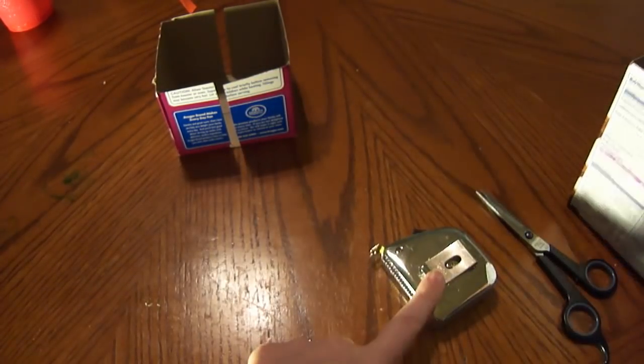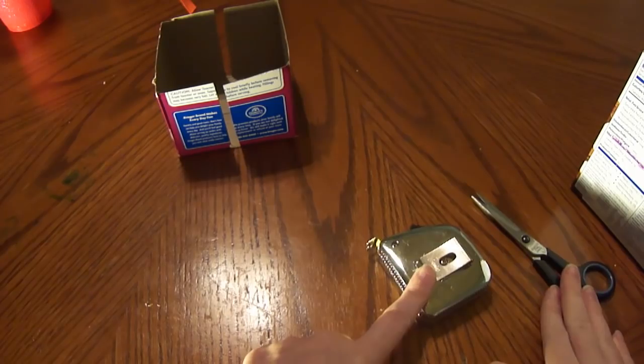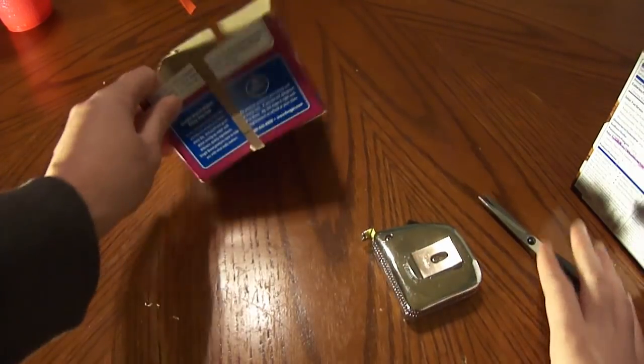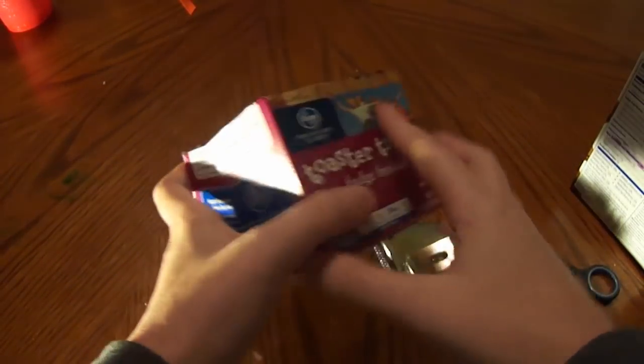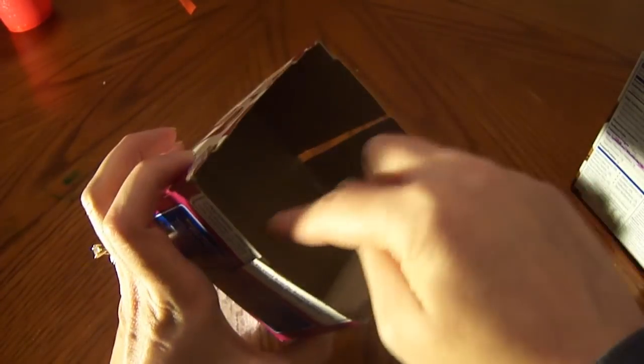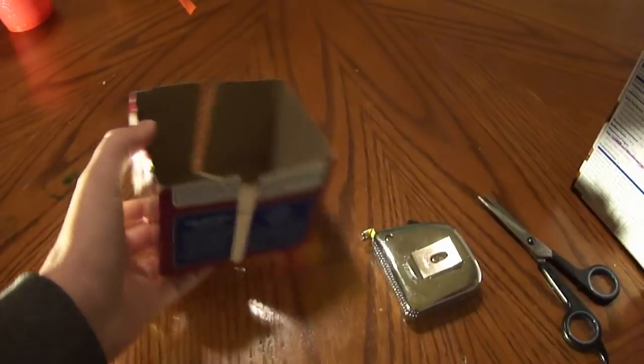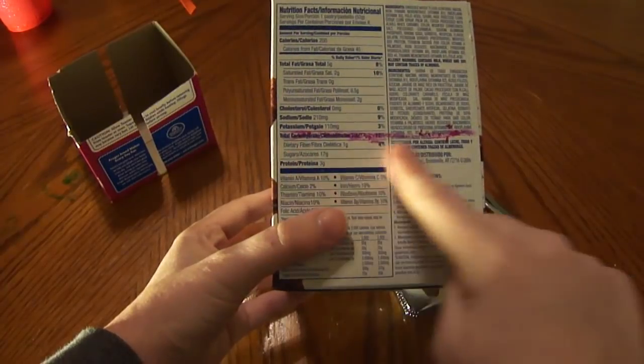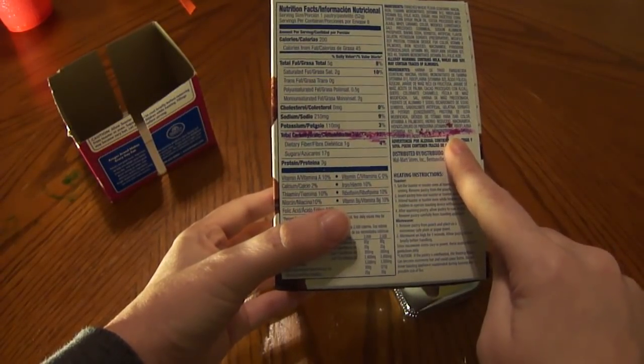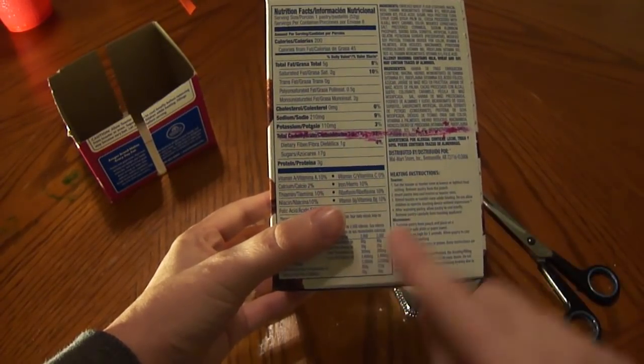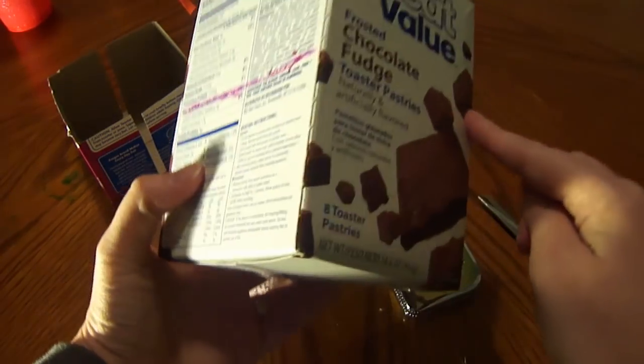What I'm using is a pop tart box. You're going to need a tape measure and some sharp scissors. The box that I'm making is three and a half by three and a half. And as you can see, I've already went and measured where I need to cut. It's going to be three and a half inches. So you just need to cut around the box.